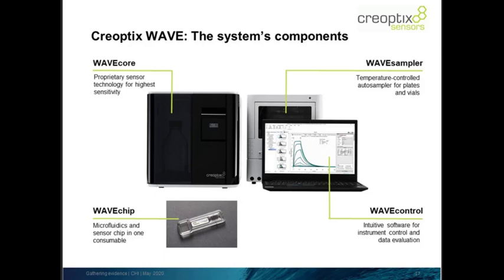Another question for Ellen: could you comment on using the Creoptix Wave for bispecifics and whether avidity effects are seen upon binding of individual antigens? Avidity effects for bispecifics can get tricky — it matters which portion is injected and whether we're talking about peptides, proteins, or a mix. One way to help is to push down the amount of protein immobilized on the surface, leveraging the instrument's sensitivity to minimize avidity effects on your measurements. Ultimately, some empirical experiments will still be required.